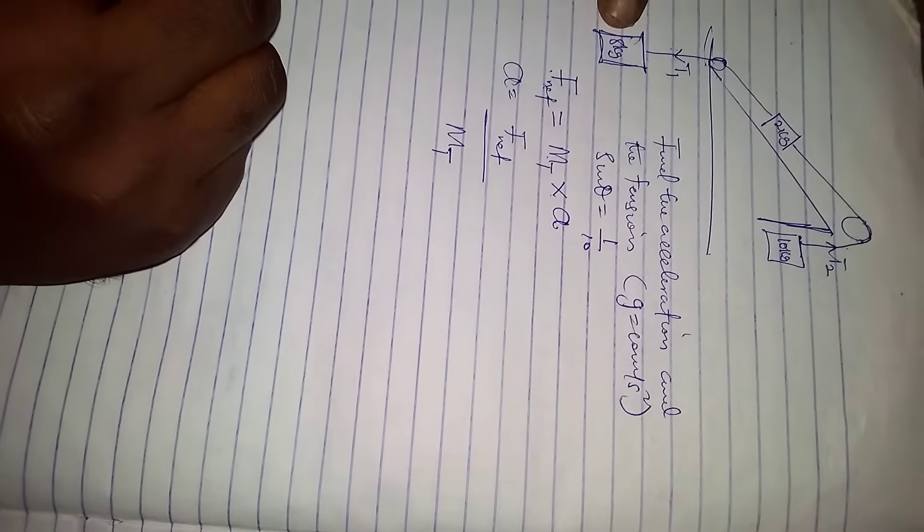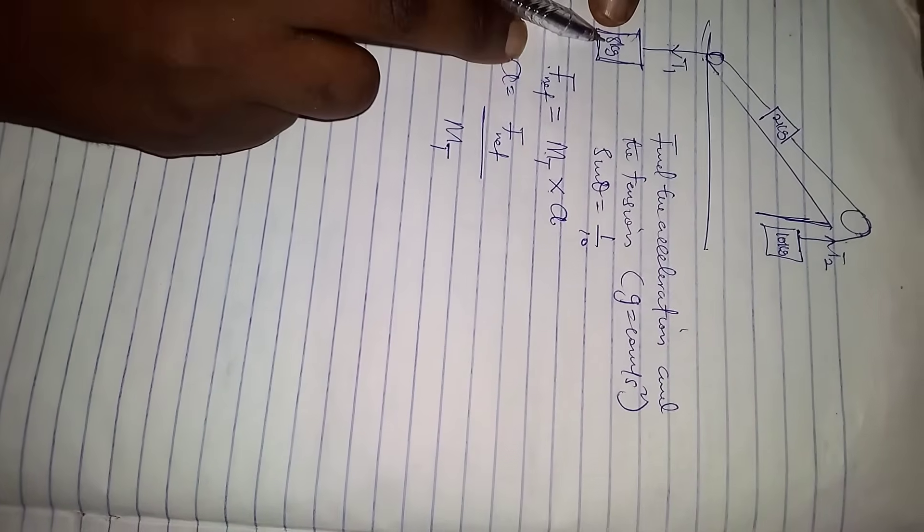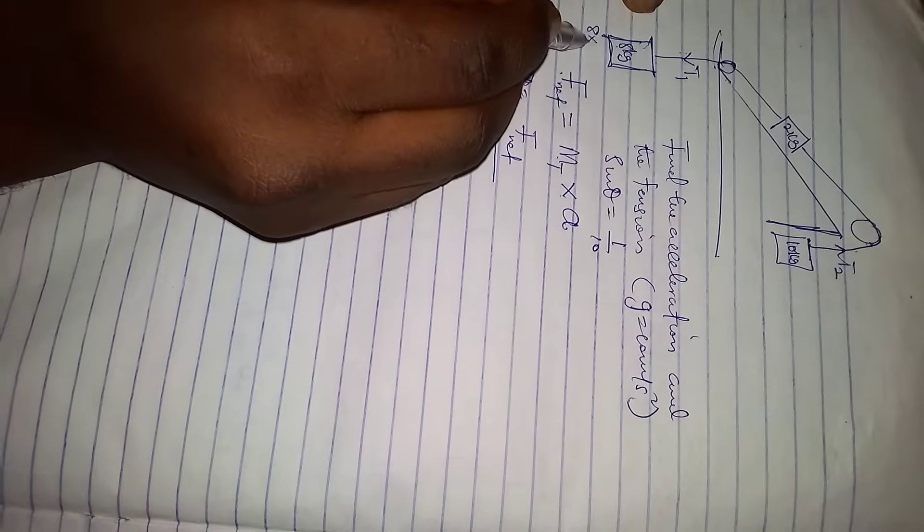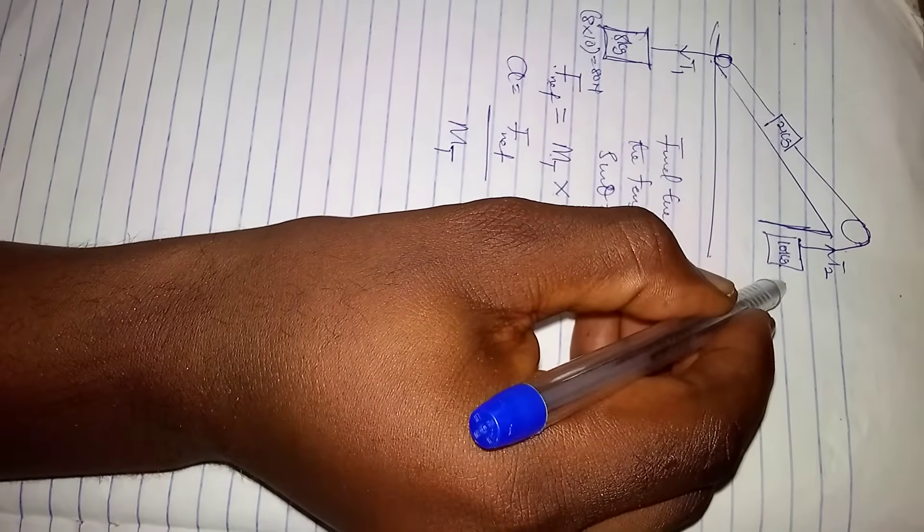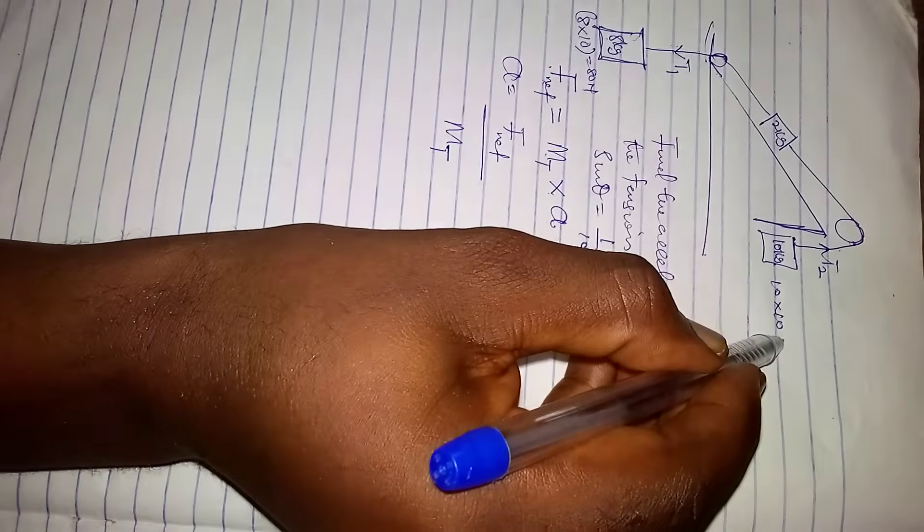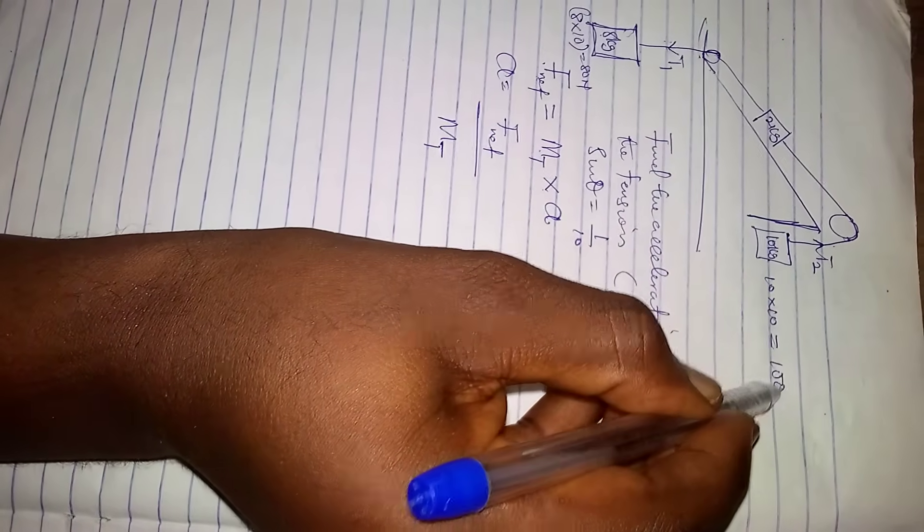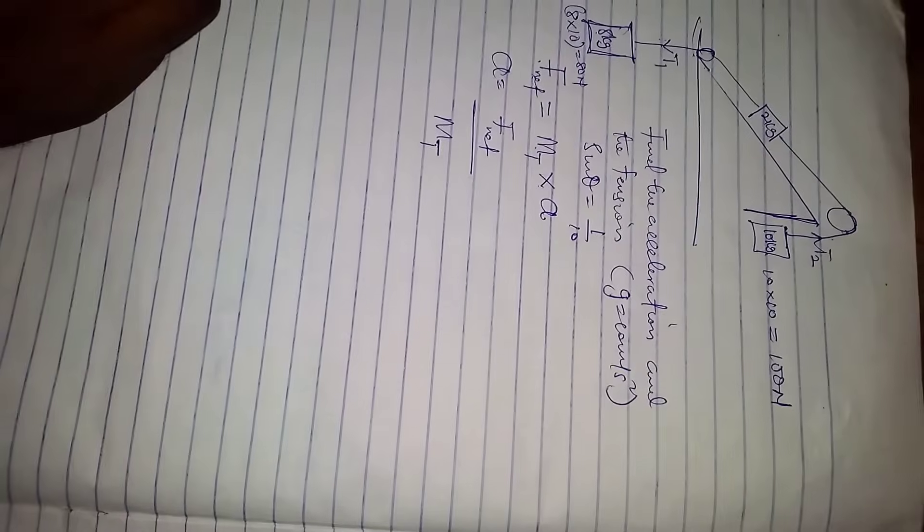The force on eight kilogram is eight times ten which equals 80 newton. The force on 10 kilogram is 10 times 10, which equals 100 newton.